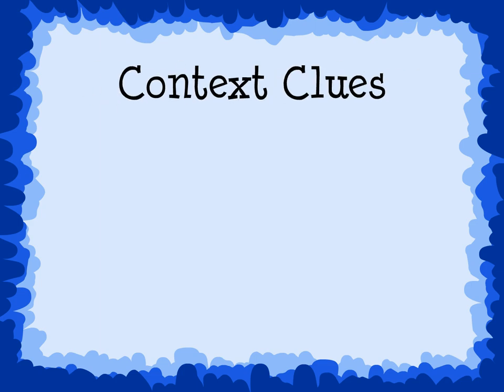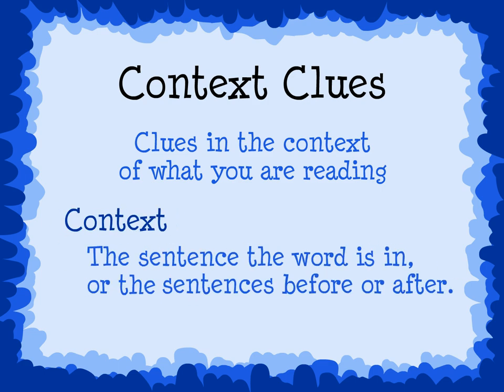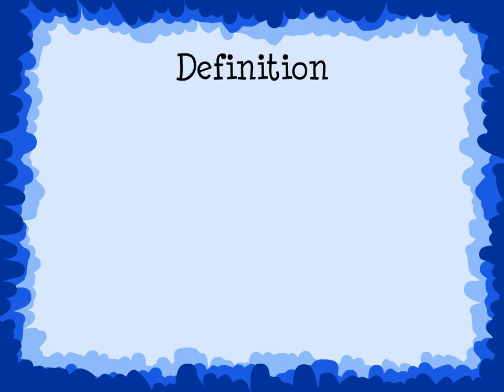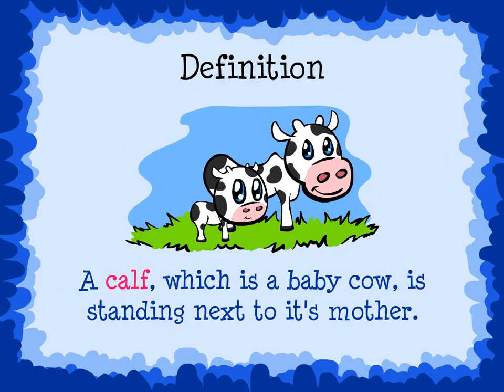Another strategy good readers use to help them figure out words they may not know is to use context clues. Context clues are clues that appear in the context of what you're reading. The context is the sentence the word is in, or the sentences before or after it. Some context clues give the definition of the word. Take this sentence for example: a calf, which is a baby cow, is standing next to its mother. Notice how the sentence tells you what a calf means — it gives the definition: baby cow.